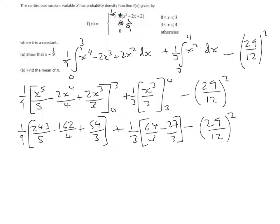So when we calculate these, this first one comes to 29 over 10. The second one is 37 over 9. We're going to take away 29 over 12, all squared.